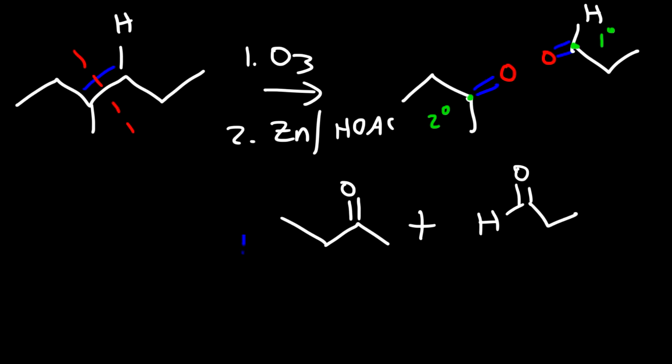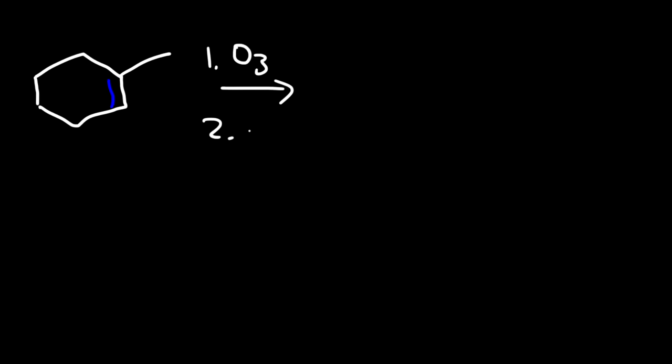So this time I got two different products. Now let's try some more examples. Go ahead and predict the major product of this reaction using dimethyl sulfide. If you see 'Me', it's a methyl group. We're going to follow the same trend: if you start with a ring, you get a single molecule as opposed to two molecules. If you start with a chain, you'll get two or more molecules per double bond.